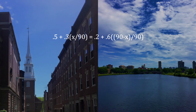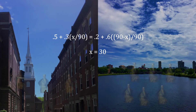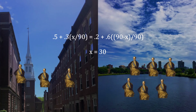Let x be the number of troops allocated to defending the land. Thus, 90 minus x is the number of troops allocated to defending the sea. Where those two lines intersect is where the two probabilities of victory are equal. Some simple algebra shows that you get equality at x equal to 30. Thus, the answer to this puzzle is that you need to allocate 30 troops to the land and 60 troops to the sea — that is, one-third by land and two-thirds by sea.